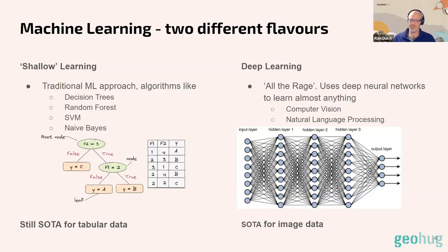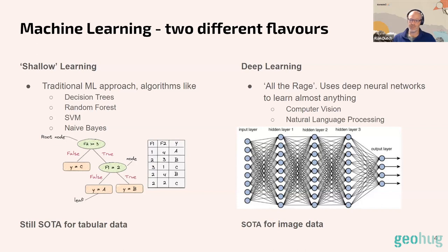These deep learning approaches are the current state of the art for unstructured data — images and natural language — and this is how ChatGPT is built. On the flip side, we have shallow learning: more traditional machine learning using statistical approaches like decision trees, random forests, and support vector machines. These are geared toward structured tabular data — think Excel spreadsheets with columns and rows. For modeling tabular structured data, boosted decision trees like XGBoost and CatBoost are still the best approach.